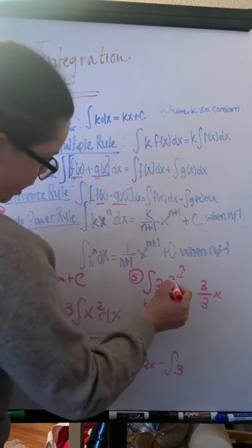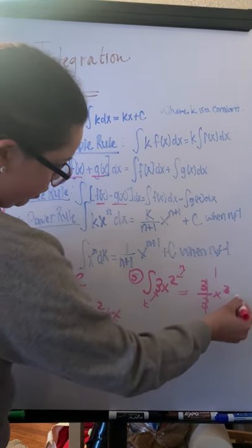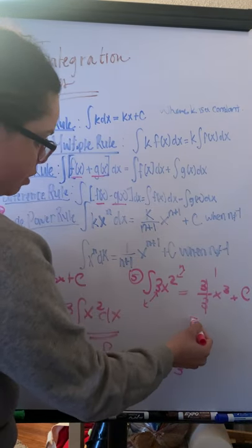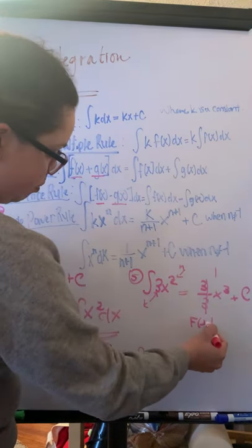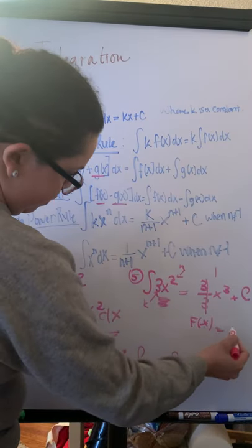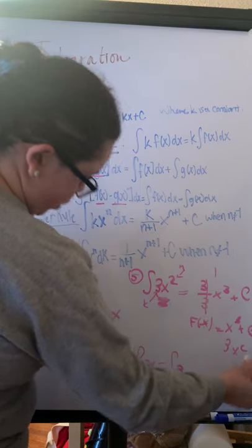This reduces to 1. I always have a plus c on the end. To check: if this is correct, the derivative of x cubed plus c should equal 3x squared, which it does.